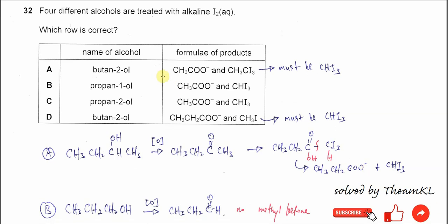Question 32. Four different alcohols are treated with alkaline iodine solution. When we see this alkaline iodine solution, it means it's something with iodoform.